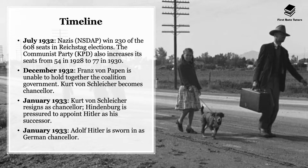In December 1932, Franz von Papen was unable to hold together the coalition government and resigned; Kurt von Schleicher became chancellor. In January 1933, Schleicher also resigned and Hindenburg was pressured to appoint the now extremely popular Hitler as his successor. Adolf Hitler was then sworn in as German chancellor, and effectively the period of democratic freedoms in Weimar Germany came to an end.